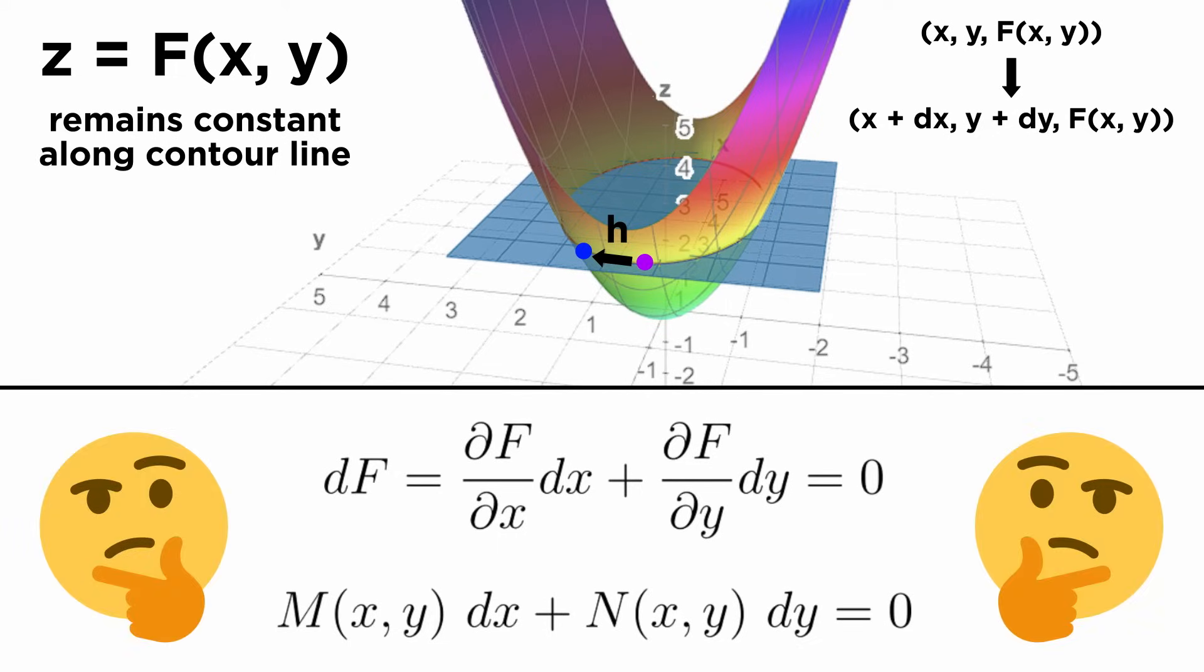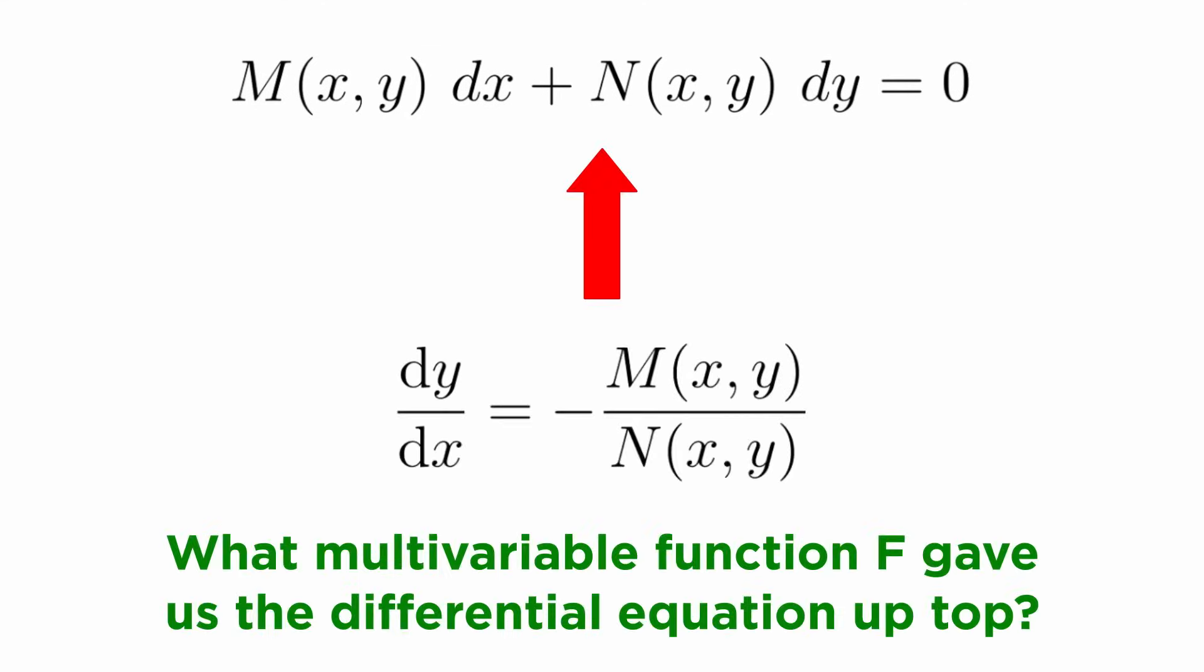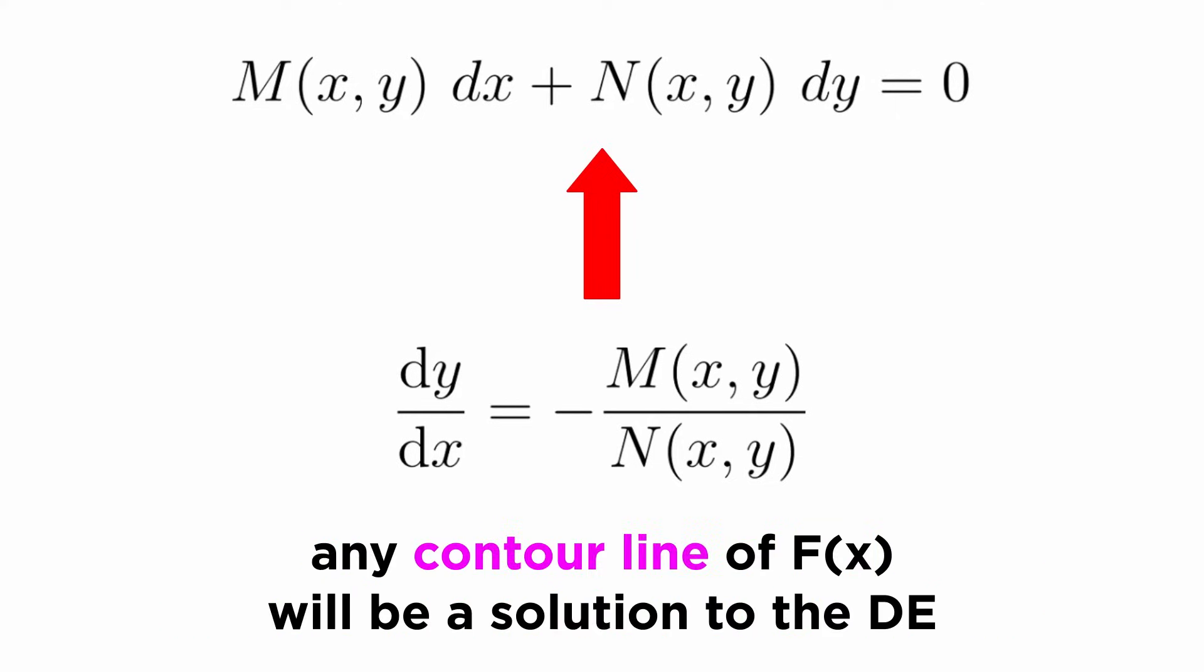But what's the point of all this? If we are faced with a differential equation that looks like this general form, M(x,y)dx + N(x,y)dy = 0, we can try to reverse engineer it to find out what multivariable function f it could have come from, and then any contour line of this function will be a solution to our differential equation.